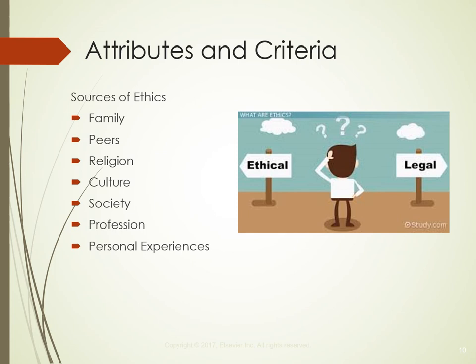Family initially forms the most powerful influence on ethics, providing many of our earliest lessons about right and wrong. A similar influence is the culture in which we are raised, including cultural practices related to our ethnicity, geographic area, socioeconomic status, and faith tradition. Peers become a source of ethical awareness as one is exposed to new experiences in the larger world. Education introduces new ways of thinking about difficult issues. Professional education in particular is charged with both technical training and a person's awareness of the ethical practice of the profession. Once in the workplace, your colleagues and the organization where you work may further alter your views and behaviors.